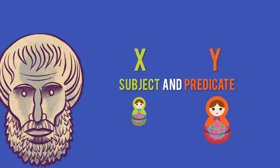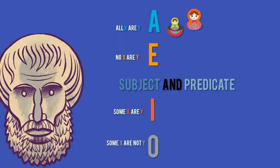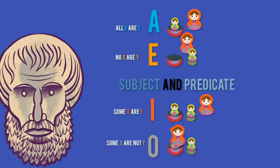So going down the list, all the green dolls are in the red dolls. That would be A. E would be, none of the green dolls are in the red dolls. I would be, some of the green dolls are in the red dolls. And O would be, some of the green dolls are not in the red dolls. And yes, I and O are really just two ways of saying the same thing. But you're going to need both of them, because different circumstances will give you access to different levels of information.